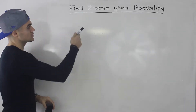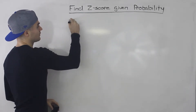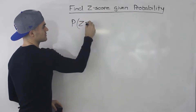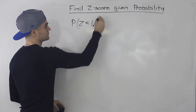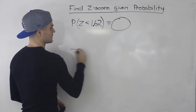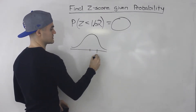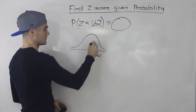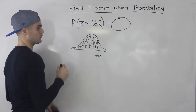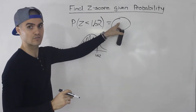To show the notation of what we did before versus what we're going to be doing now: before, we were given a Z-score — let's say maybe 1.62 — and we were finding the probability. Basically, we were given that Z-score and finding the probability, which is the same thing as the area under the graph.